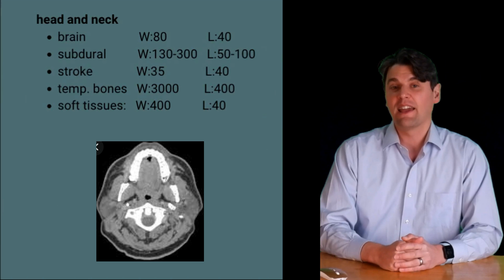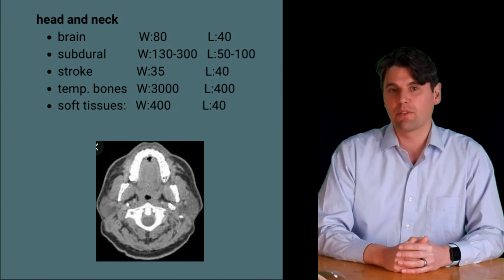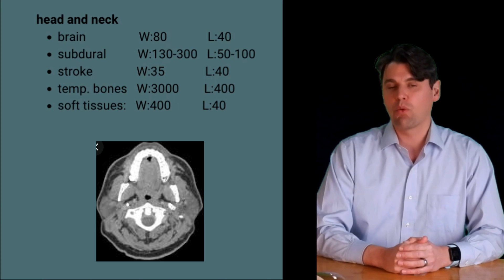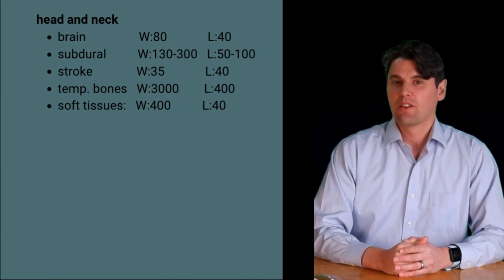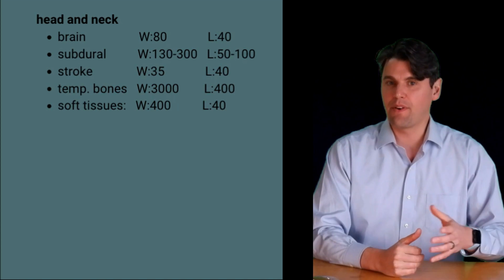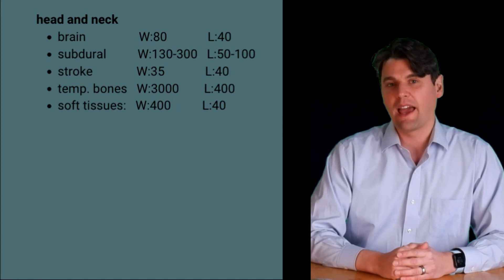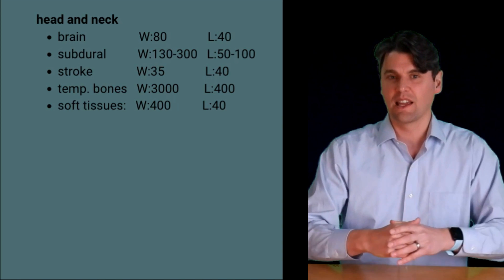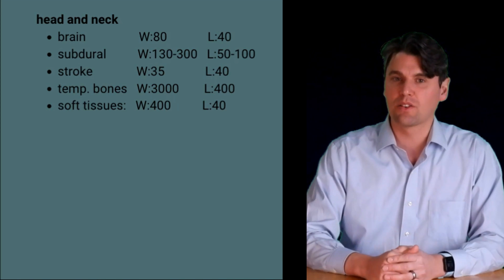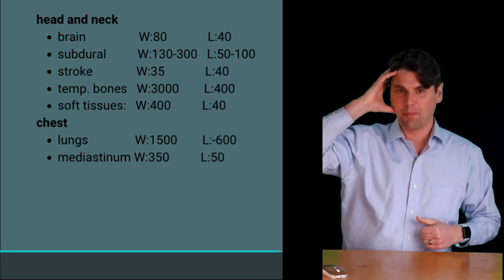If we're looking at the neck — specifically the soft tissue neck — we again want the level to be around 35 to 40, and we want to widen the width so that we can look at soft tissues and fat. We'll typically want a lower noise image there, with a width of around 400. This is more similar to what we'll see in the body when looking at regular soft tissues.